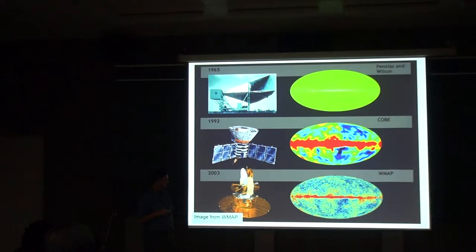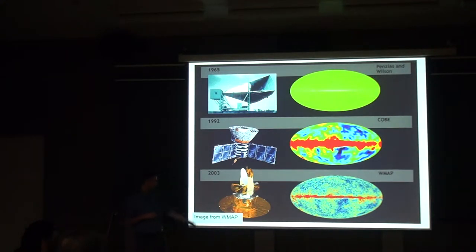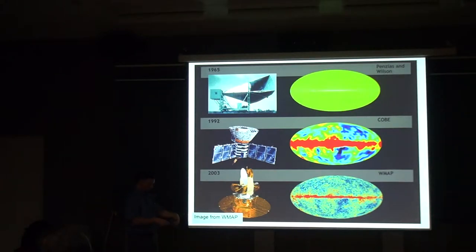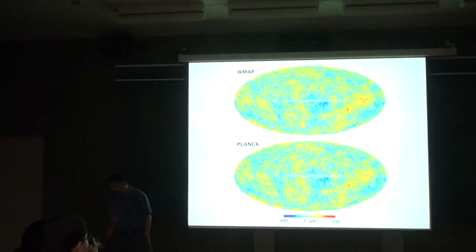The WMAP fluctuations are a high-resolution view of the COBE map. What we're mapping is actually the ripples at a redshift of 1,000 — when the universe was 1,000 times smaller than today. The fluctuation that was in our neighborhood of the universe is what grew to form our galaxy. These are the fluctuations that seeded all structure formation.